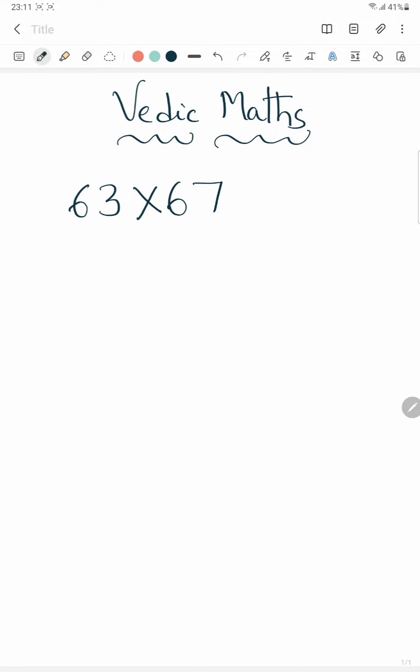63 into 67. Using Vedic Maths, we can do calculations very easily. So can you say what is the answer? I am saying here it is 4,221.